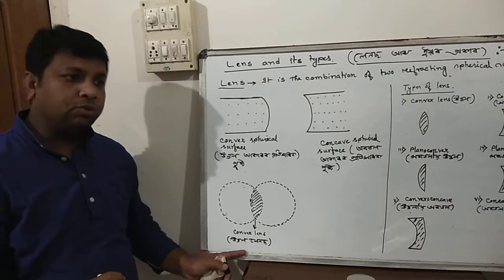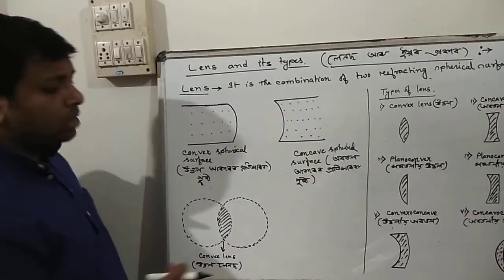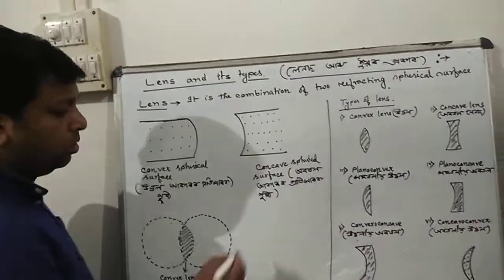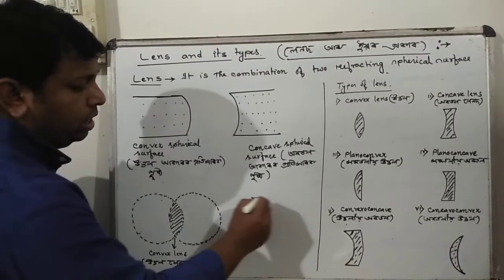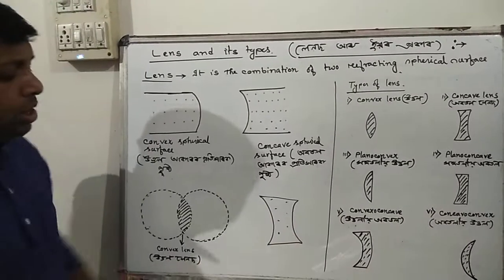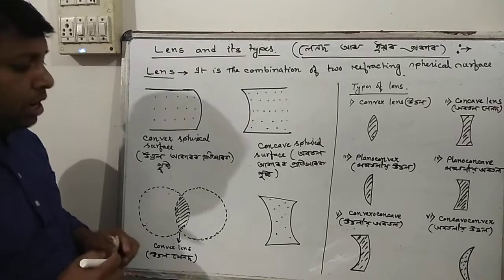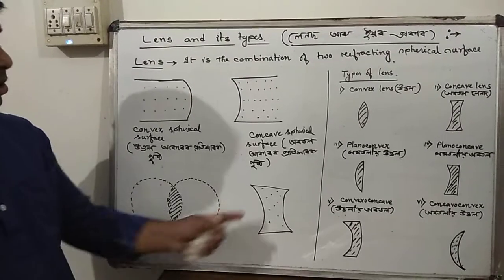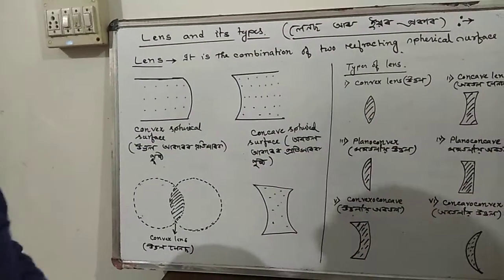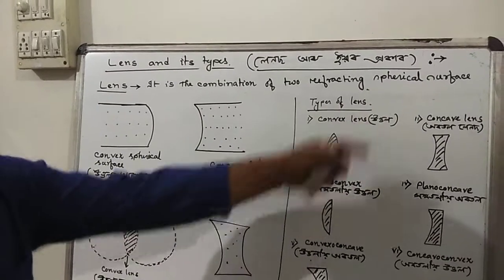Now if we take concave spherical surfaces, that is obotol or concave surfaces, and combine them, we get obotol lens. When both parts are concave, it forms an obotol lens. This is the basic classification we will discuss - the types of lenses.